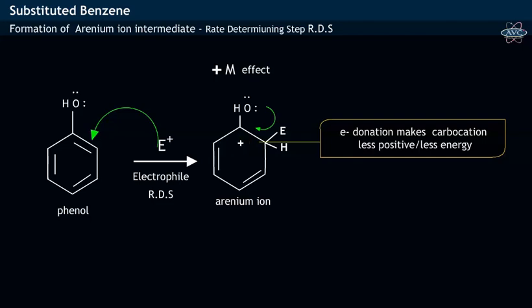This resonance effect makes the arinium ion of phenol less charged or less positive, and thus makes it more stable towards electrophilic aromatic substitution. Thus, we may conclude that phenol is more reactive than benzene towards electrophilic aromatic substitution.